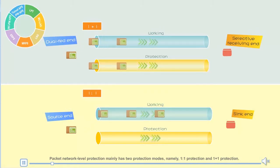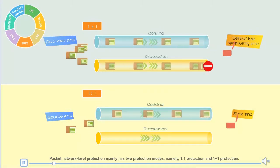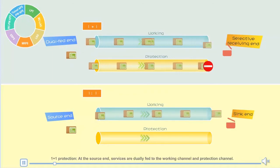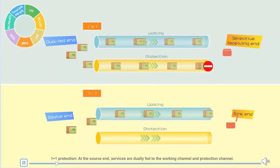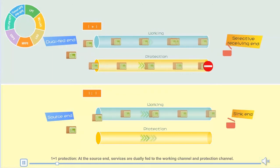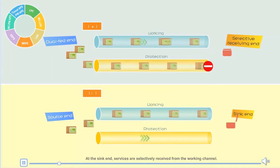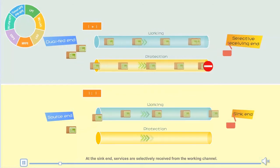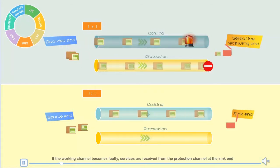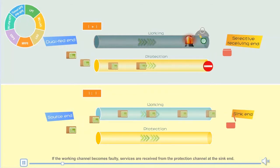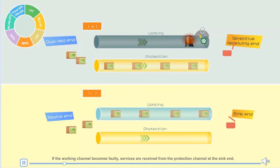Packet network level protection mainly has two protection modes: 1-to-1 protection and 1-plus-1 protection. In 1-plus-1 protection, at the source end, services are duly fed to both the working channel and protection channel. At the sink end, services are selectively received from the working channel. If the working channel becomes faulty, services are received from the protection channel at the sink end.